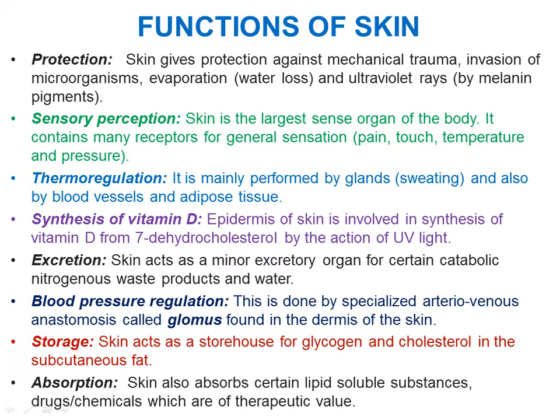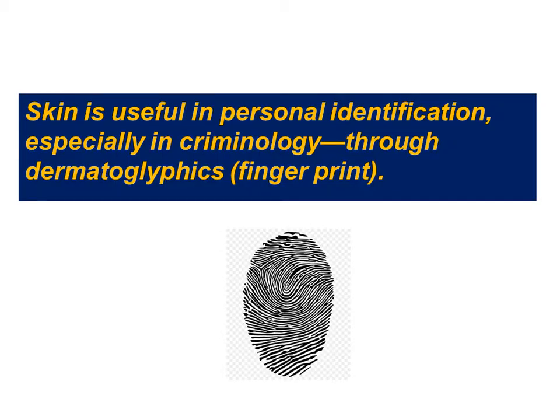Skin also performs storage — it is a storage house for glycogen and cholesterol in the subcutaneous fat. Skin also has absorption function, absorbing certain lipid-soluble substances, chemicals, and drugs, such as different ointments or creams applied on the surface of the skin. Applied anatomy: dermatoglyphics is useful for personal identification, especially in criminology.